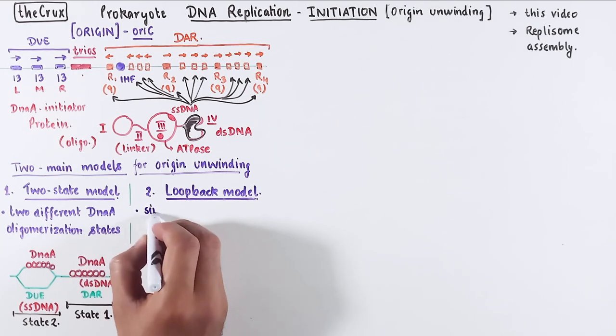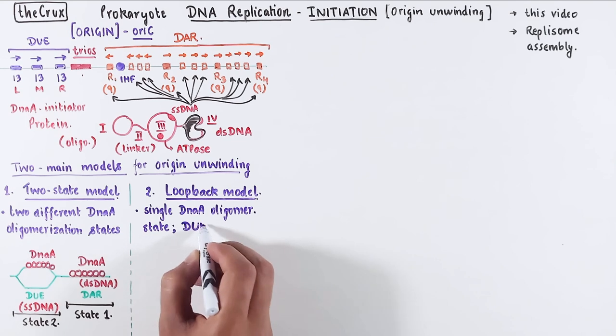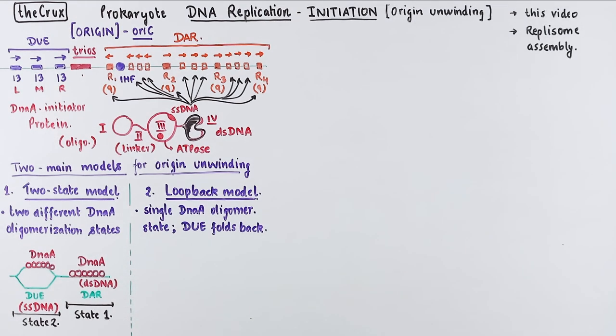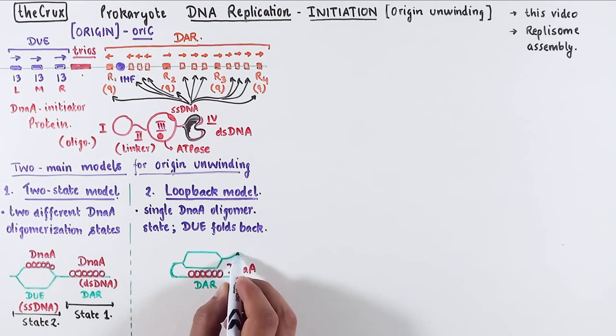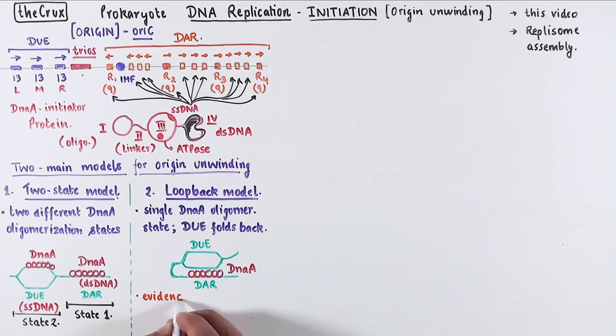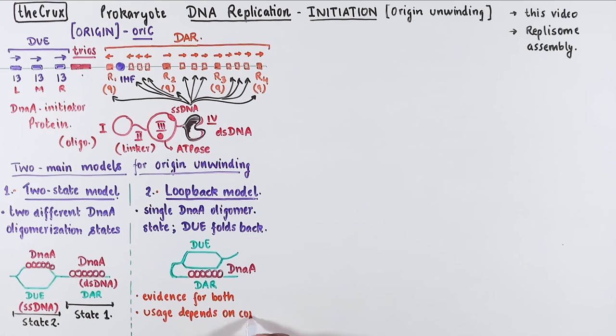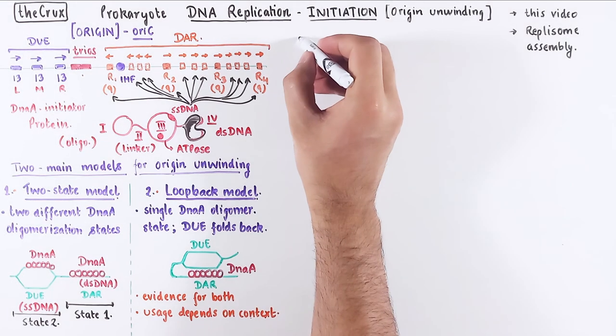Now in contrast, according to the loopback model, there is only one DnaA oligomerization state, but it invokes a folding or looping of the DUE element. Visually, what this means is that there is a DnaA oligomer that assembles at the DAR, and when the origin unwinds at the DUE, the DUE folds back onto the DnaA oligomers at the DAR. There's a good amount of evidence for both of these models. The usage of these models probably depends on the context of protein concentration, origin structure, and a bunch of other things.